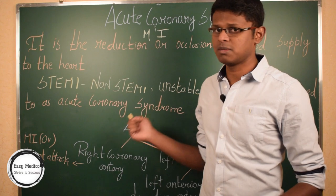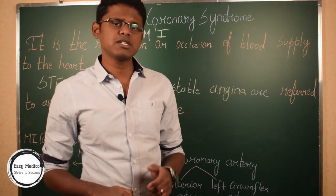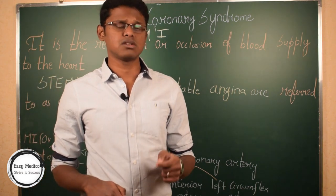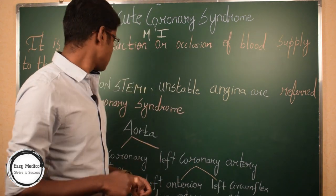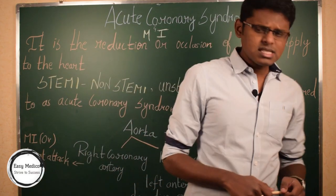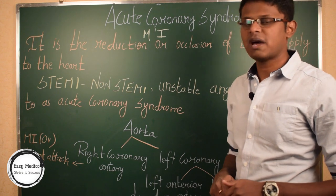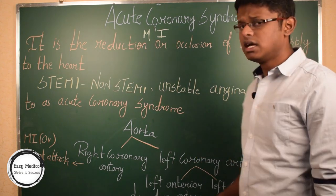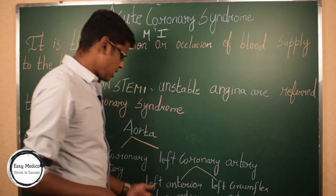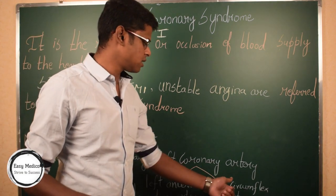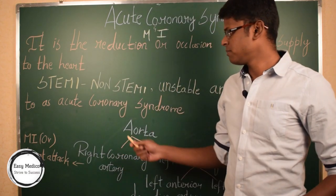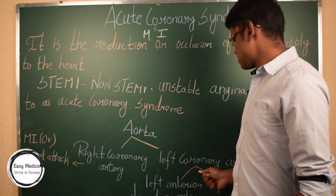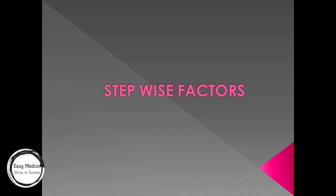STEMI means ST-segment elevation myocardial infarction and non-STEMI is non-ST-segment elevation myocardial infarction. This occurs in the aorta, specifically at its bifurcations. The first bifurcation is the right coronary artery and the next is the left coronary artery. The left coronary artery is further divided into the left anterior descending artery and left circumflex artery. Myocardial infarction or heart attack occurs in the right coronary artery, left anterior descending artery, and left circumflex artery.